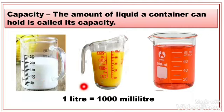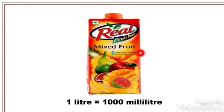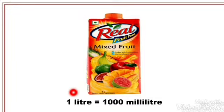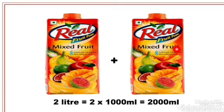One liter has 1000 milliliters. Now if you have two packs, how much will it be? One liter plus one liter is two liters. And one liter means 1000 milliliters, so 1000 milliliters plus 1000 milliliters is 2000 milliliters.